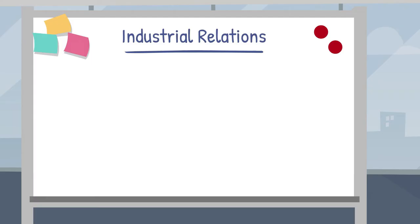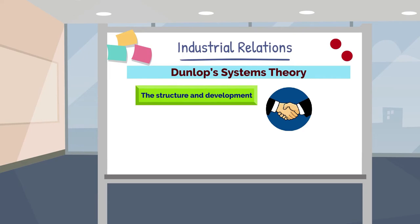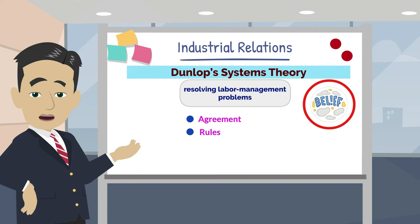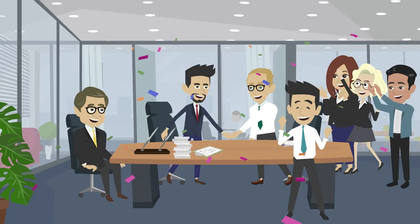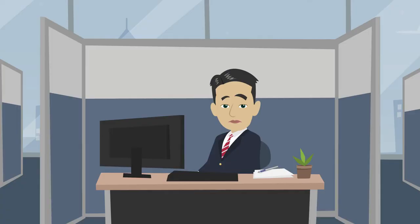In closing, remember that Dunlop's systems theory is about the structure and development of relationships among the three key members of labor relations — labor, management, and government — and about resolving labor-management problems based upon agreement on a common set of beliefs and providing the rules necessary to maintain the relationship despite impacts from other forces beyond the parties' control on the IR system.